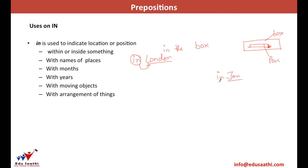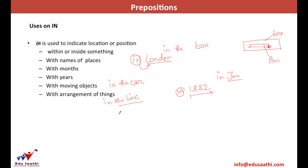'In' is also used with years — for example, 'in 1882.' If you are on a moving object, you say 'I am in that object' — for example, 'call me later, I am in the car,' because the car is moving. It is also used to describe the arrangement of things — for example, 'the students were standing in the line,' because it describes the arrangement of people.